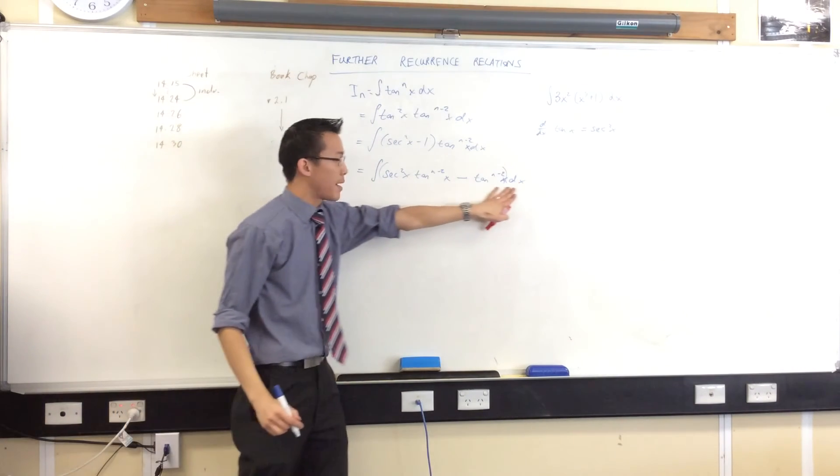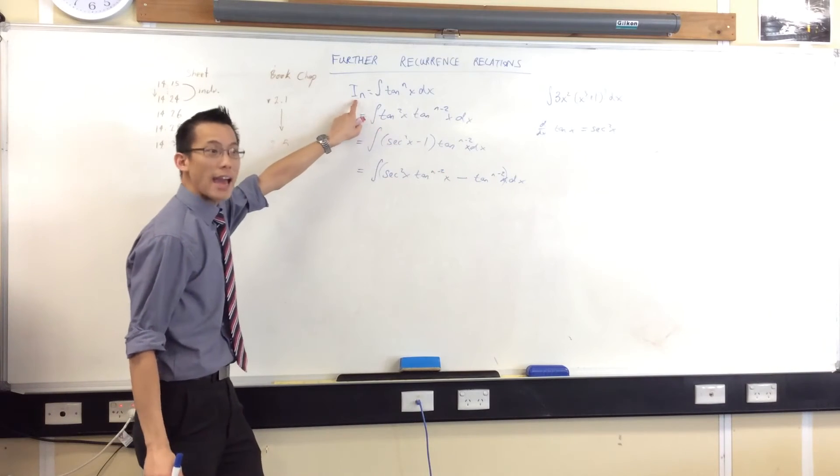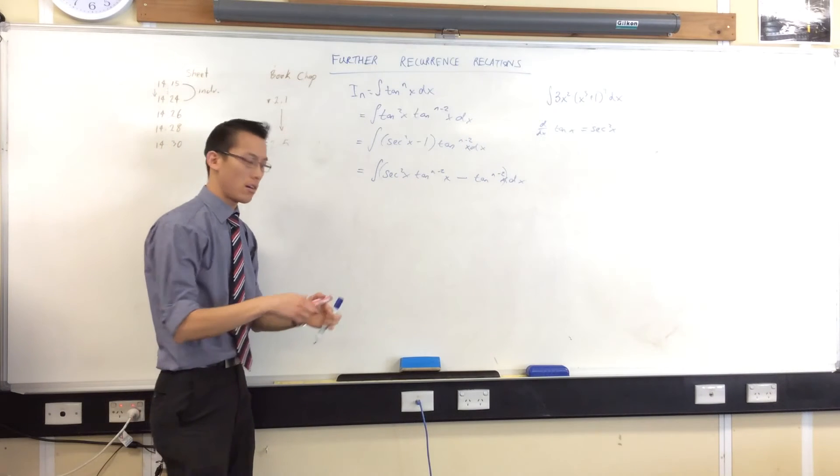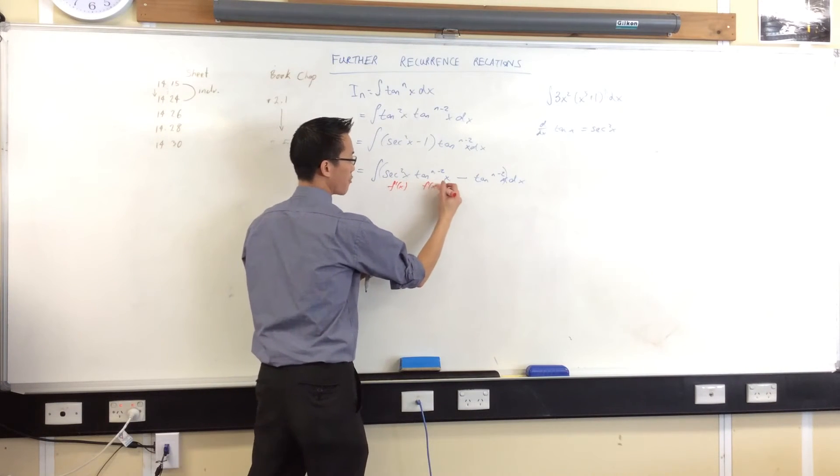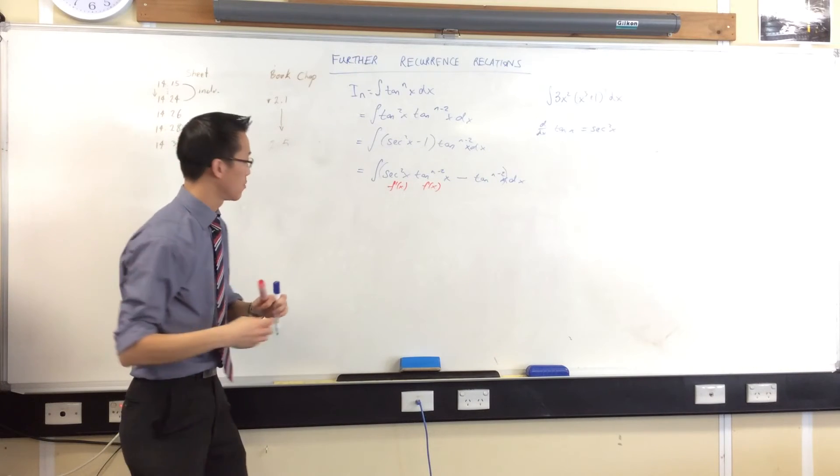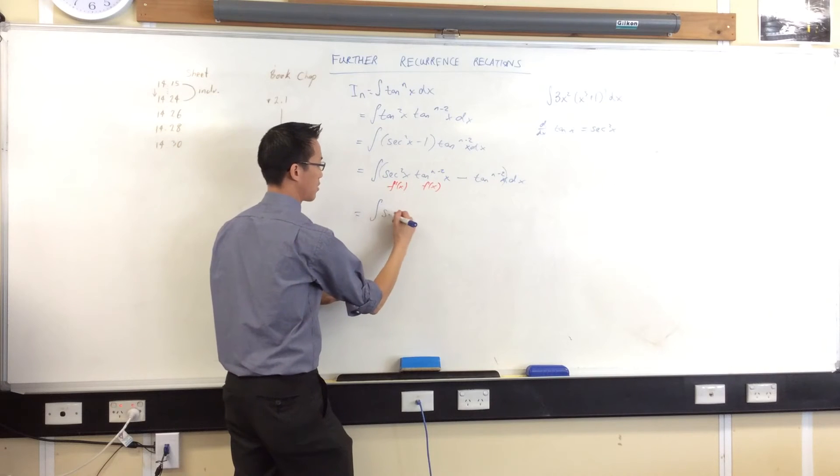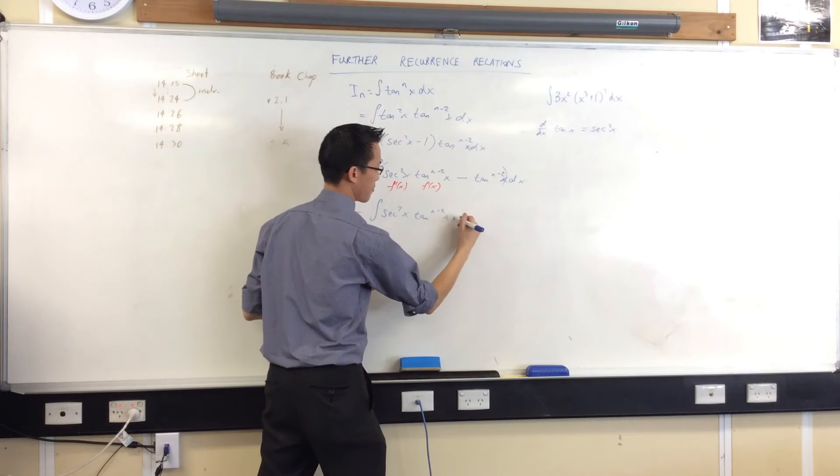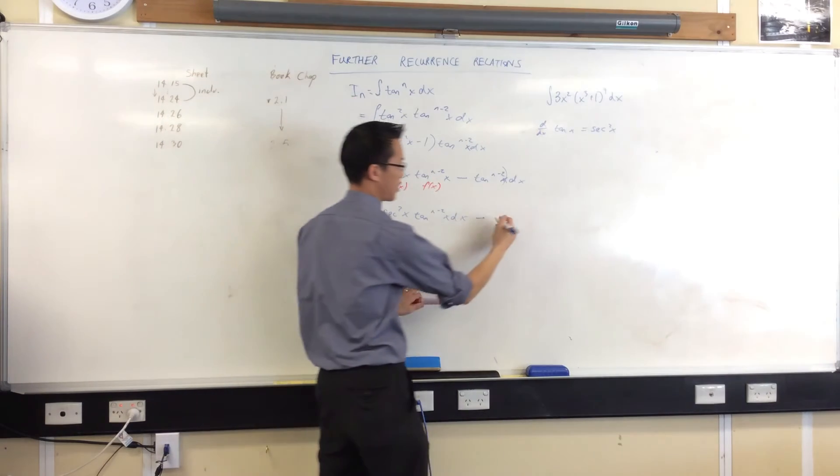Now, I'm not worried about this guy. As an integral on his own, he's just, what is he? He's I_(n-2), isn't he? Because that's what the power is. What about this? Well, there's my f dash, and there's my f, right? So, therefore, what's this going to be equal? If I treat them separately, right? Let's have sec squared tan. And I'm going to subtract, just like you told me, I_n, but it's n minus two.